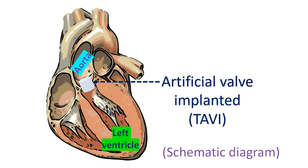In the more commonly used approach for TAVI, an artificial valve mounted on a balloon catheter is introduced through the femoral artery. It is guided up to the aortic valve through the aorta under fluoroscopy. Once the position of the artificial valve across the aortic valve is confirmed, the balloon is inflated using a syringe-like mechanism attached to the other end of the device.